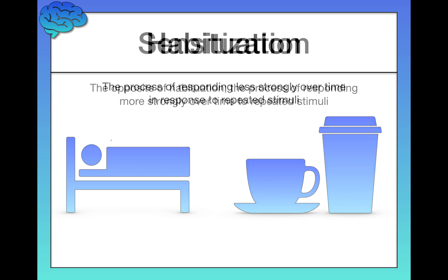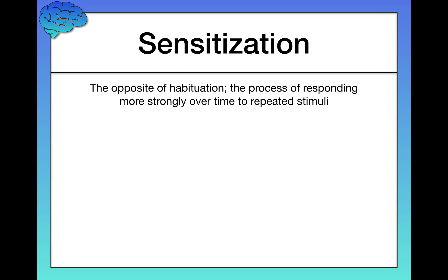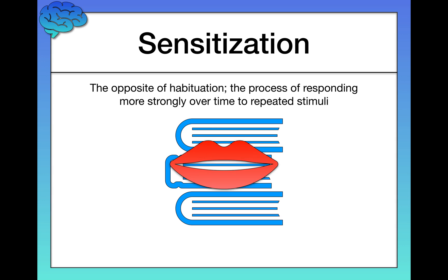The opposite of habituation is called sensitization — the process of responding more strongly over time to repeated stimuli. Why might you get sensitization as opposed to habituation? It really depends on you and the specific type of stimulus you're experiencing over and over again. For me, I get sensitization if I'm studying at the library and somebody starts whispering or chatting on the phone. It gets more and more annoying — it's a quiet environment and I just fixate on what I'm hearing. That's an example of sensitization.